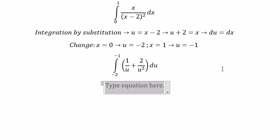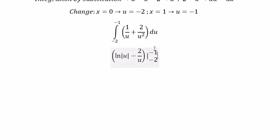Now we evaluate the integral. We put negative 1 and negative 2 into the bounds. We get ln of 1 plus 2 over 1, minus ln of 2 minus 2 over 2.